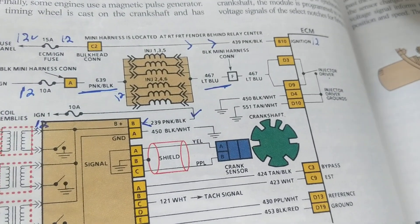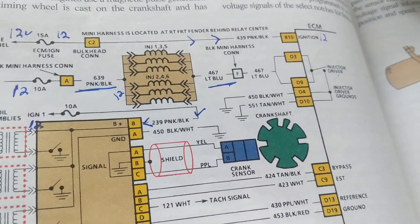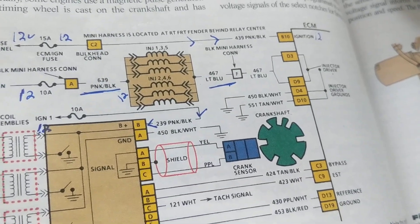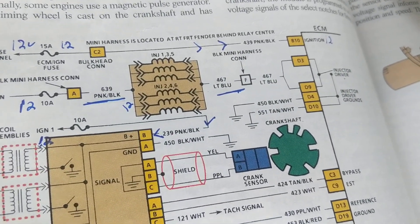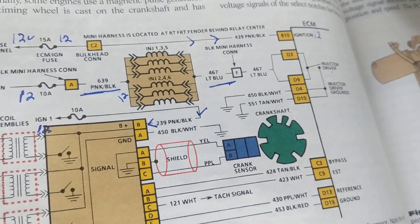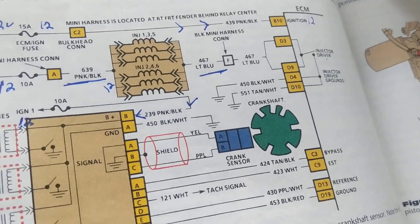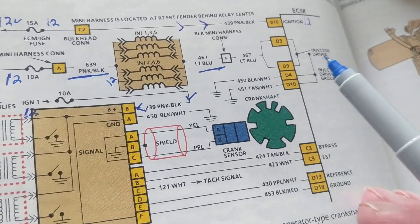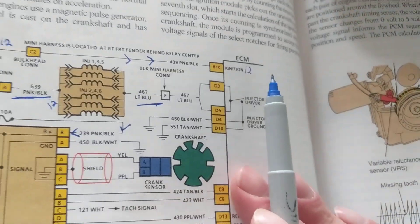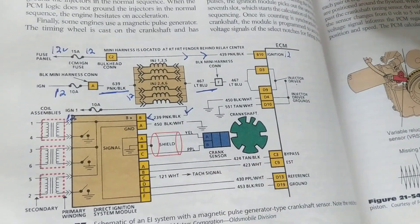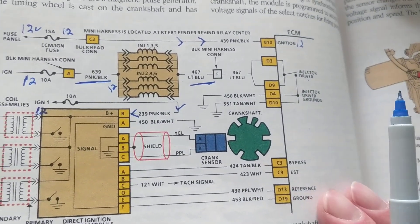Now let's say you put the scanner on it — you put the scanner in that DLC connector I described in the video. Remember, pin 16 is 12 volts, and pins 4 and 5 are ground. You put the scanner in, you get no communications, and you get a U101 code — whatever it is — indicating the computer is not communicating.